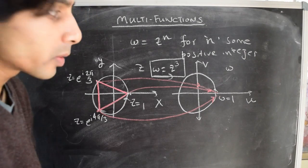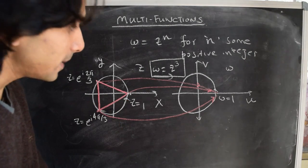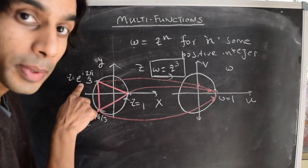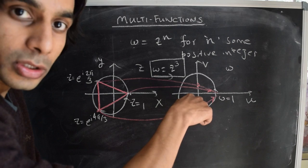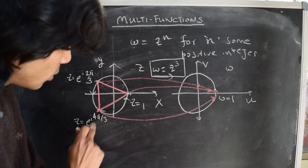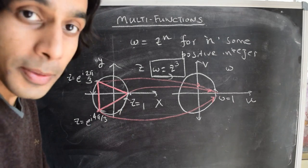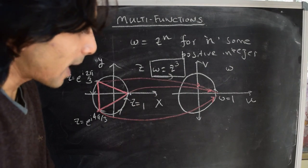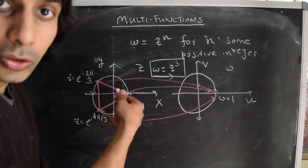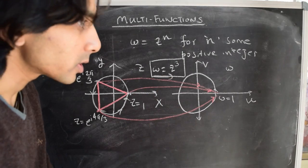A useful analogy we invoked when talking about this mapping is: if you imagine yourself walking along the unit circle in the z-plane, then by the time you cover the arc from z equals 1 to z equals e^(i·2π/3), your image has actually completed one full circle in the w-plane. Likewise, when you complete the second arc from e^(i·2π/3) to e^(i·4π/3), you complete another circle in the w-plane, and likewise for the third arc. For this particular mapping w equals z cubed, your image is walking three times faster than you are along the unit circle in the z-plane. For a generic n, your image is walking n times faster, for n some positive integer greater than 1.